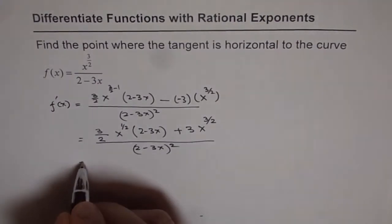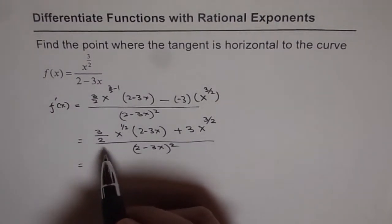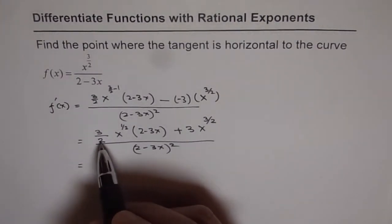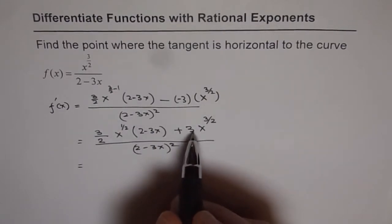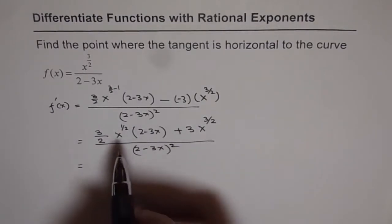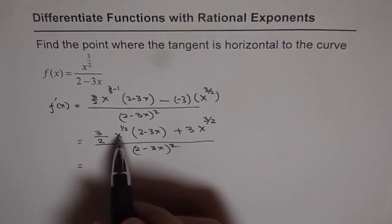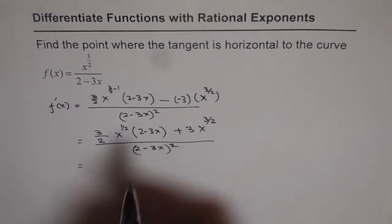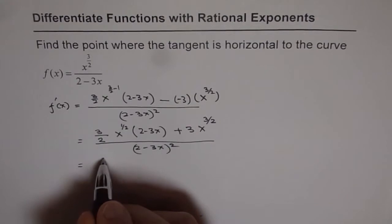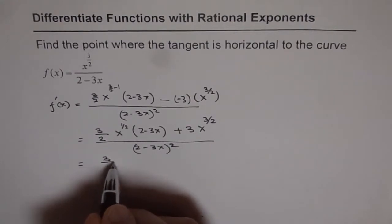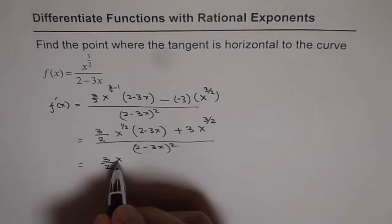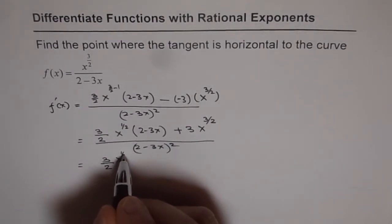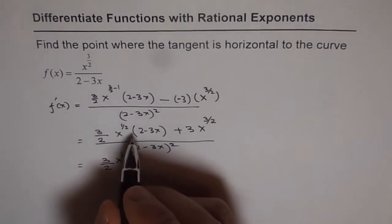Now we will take 3 over 2 as a common factor. Once we take 3 over 2 common, we multiply by 2. For the x component, we can take x to the power of half as a common factor for the numerator. So I can write 3 over 2 and x to the power of half as the common factor.